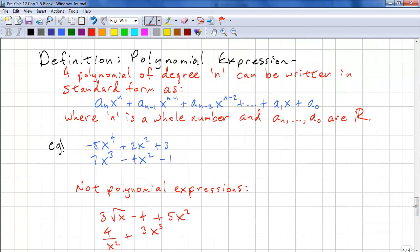Okay, last thing. Definition of polynomial expression. Polynomial of degree n can be written in the standard form. The variable is ordered by the powers in decreasing order.